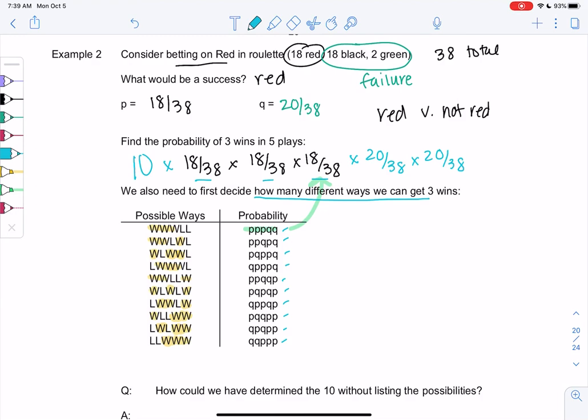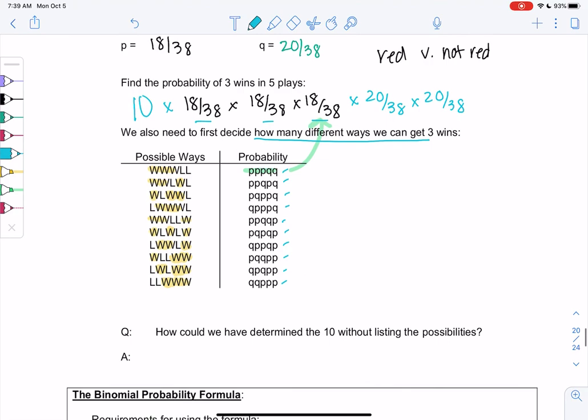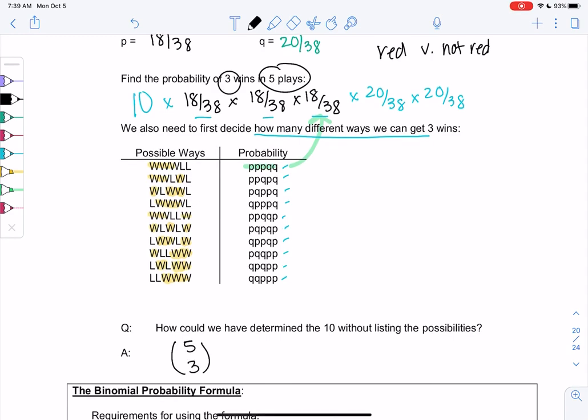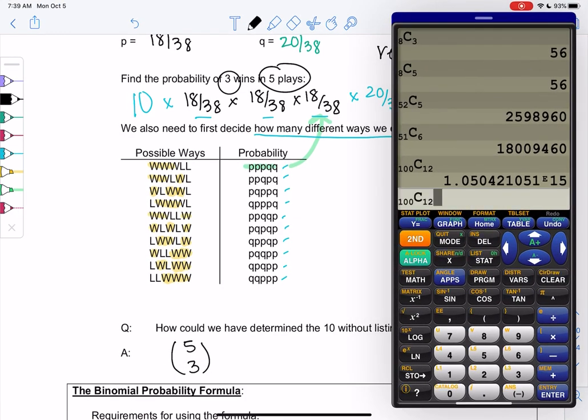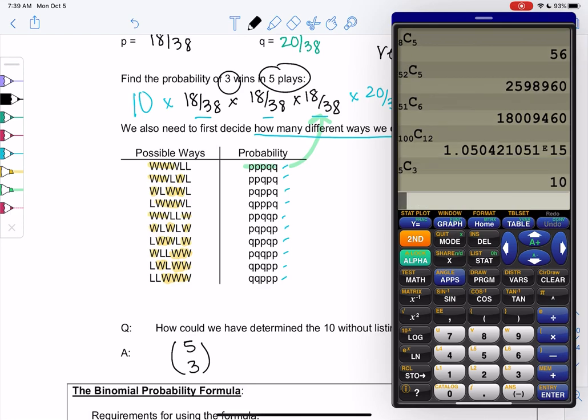So the way we find these 10 possibilities is we actually use that choose function. So since we're doing five total, and then we want three wins, it's how many ways of three out of five, basically. And if you don't believe me, go ahead and see if you get 10 on the calculator. So we'll do five choose three. Yep, and we get 10. And that'll lead us to the formula, which I think I'll save for the next video because we'll actually use the formula in the next video. So, but this was just kind of deriving the concepts, and then we can jump into a formula. So see you back.